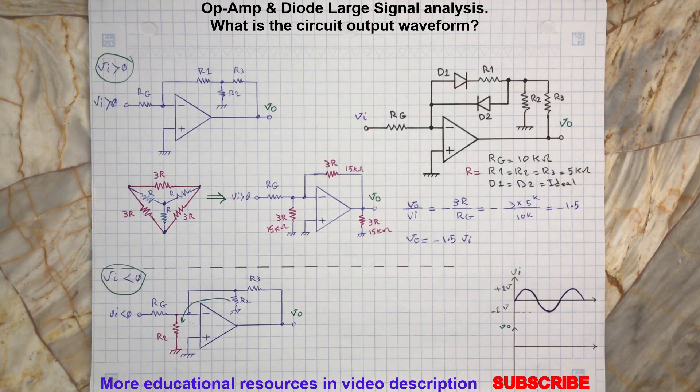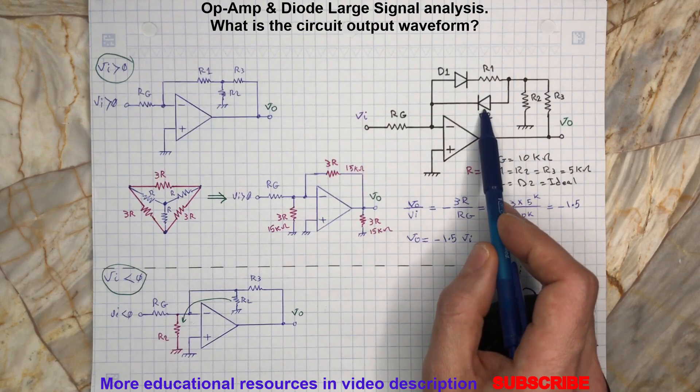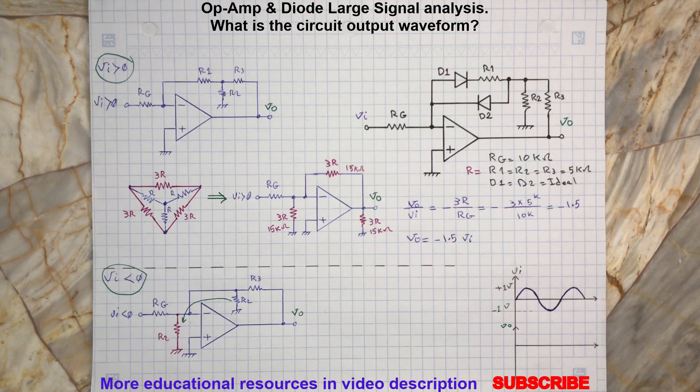At the same time, the op-amp output terminal will swing to its positive saturation limit. This is because the op-amp non-inverting terminal now appears at positive potential compared to the inverting terminal. In this condition, the diode D2 will be forward biased because its anode terminal is connected to op-amp output and its cathode to the op-amp inverting terminal, which is virtually grounded.